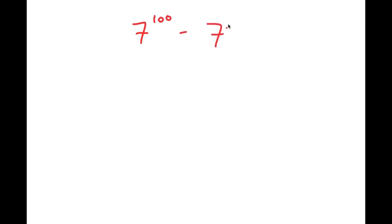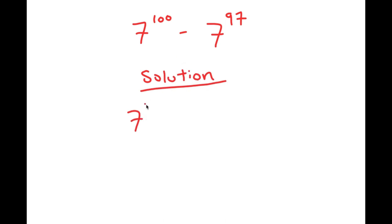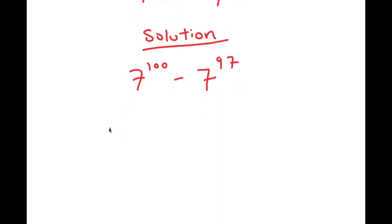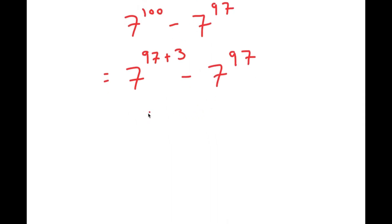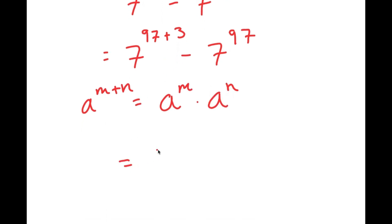Alright, so in this video I'm going to be solving the problem 7 to the power of 100 minus 7 to the power of 97. I'm going to rewrite the problem, and the first thing I'm going to do is rewrite 100 as 97 plus 3. So I get 7 to the power of 97 plus 3 minus 7 to the power of 97. Using the rule a to the power of m plus n equals a to the power of m times a to the power of n, 7 to the power of 97 plus 3 becomes 7 to the power of 97 times 7 to the power of 3.